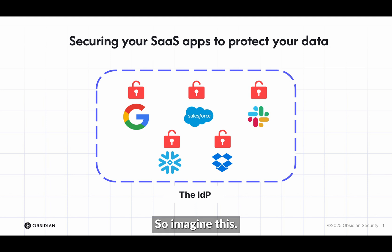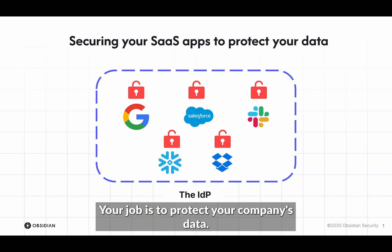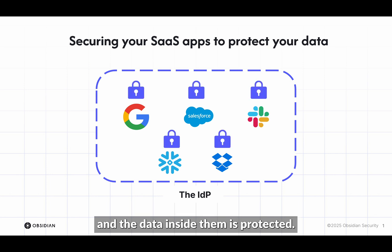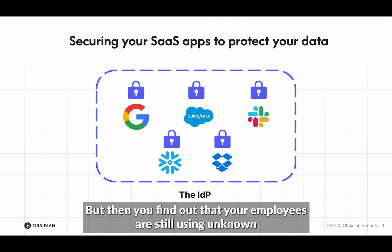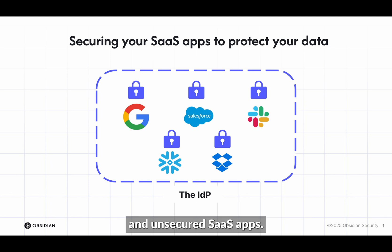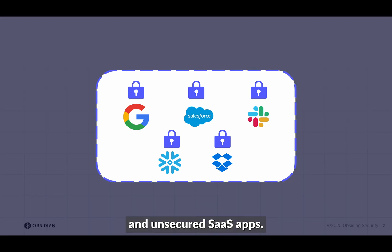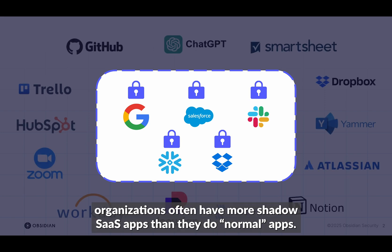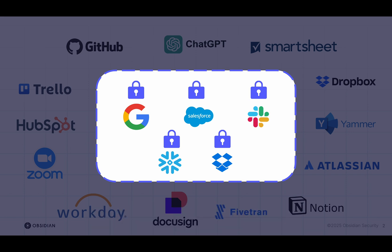So imagine this. Your job is to protect your company's data. You go through every SaaS app to make sure they're locked down and the data inside them is protected. But then you find out that your employees are still using unknown and unsecured SaaS apps. We call those apps Shadow SaaS. Because SaaS is so easy to deploy, organizations often have more Shadow SaaS apps than they do normal apps.